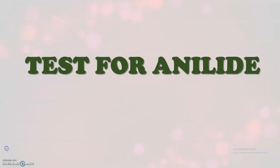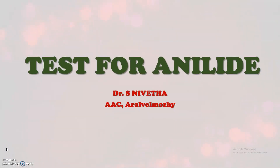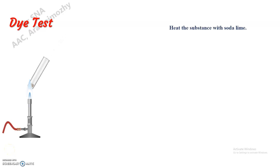Let us see how to test the presence of anilide. So here we are having the dye test. For this, first we have to heat the substance with soda lye, so that we will be getting the primary amine fragment from the compound.